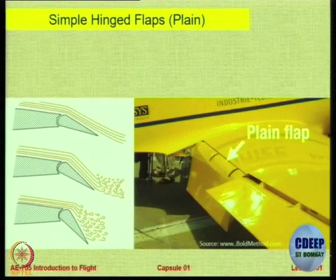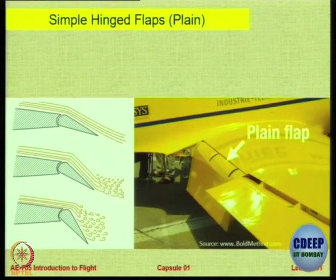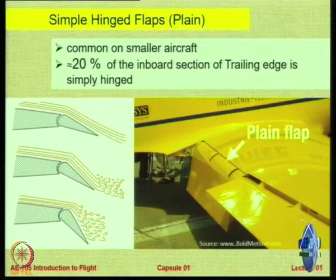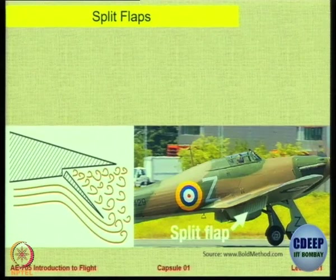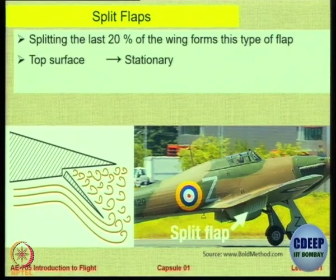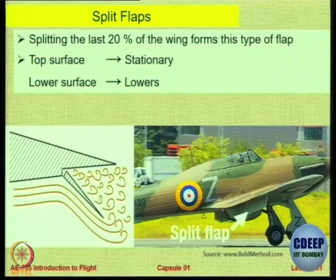Plain flaps are seen in the simplest aircraft. In aerospace, we always want to reduce cost, complexity, and weight. If a plain flap works, never use anything more complex. Typically 20% of the wing chord is simply hinged — it could be slightly more, 25% or even 30%. Split flaps are actually less effective: only the bottom portion moves down while the top surface remains stationary, so just the last 20% of the wing's lower surface forms the flap.